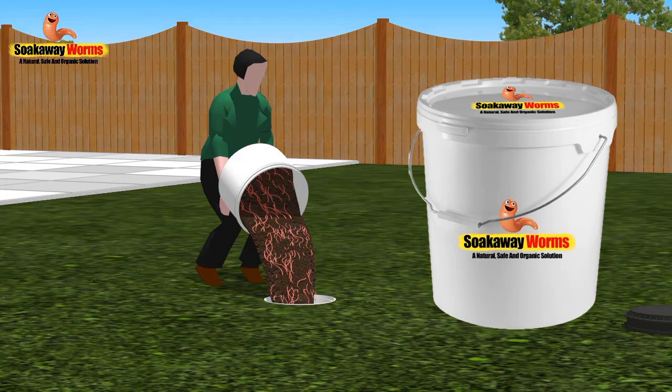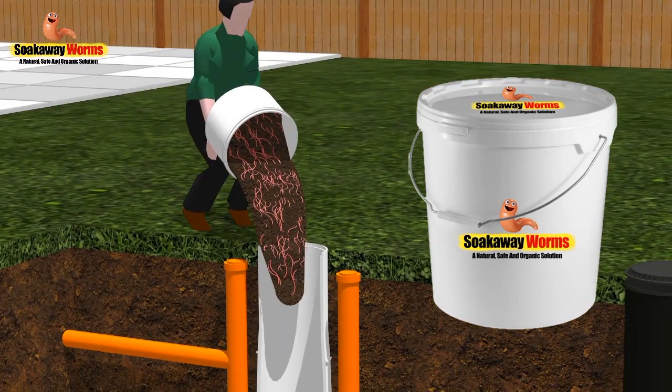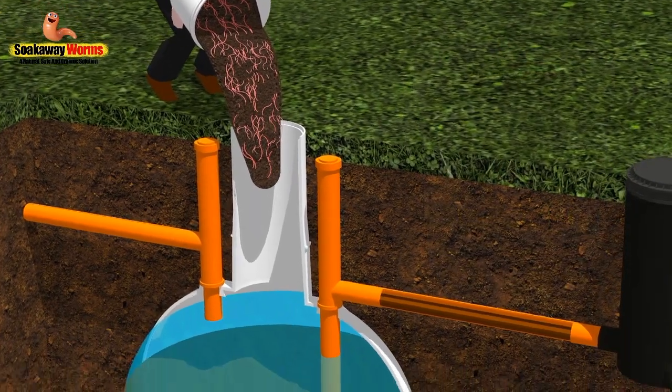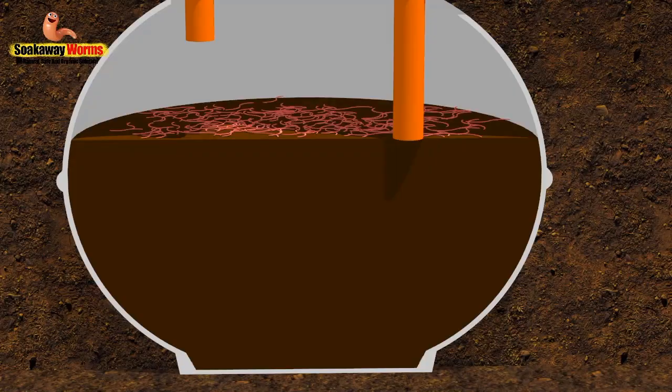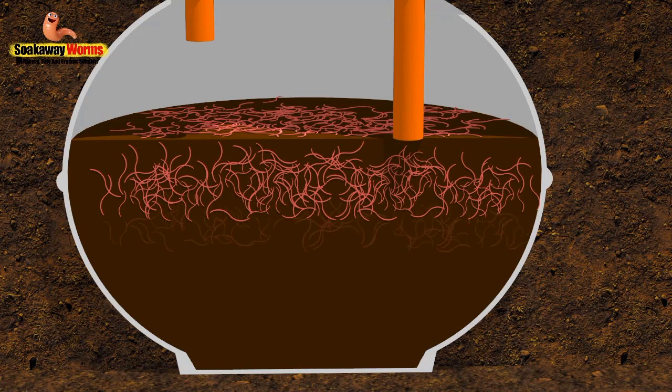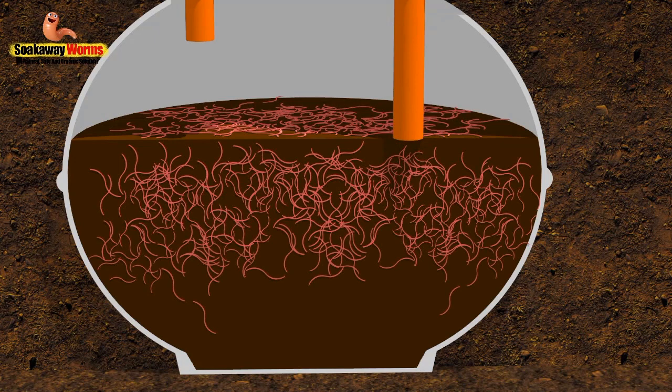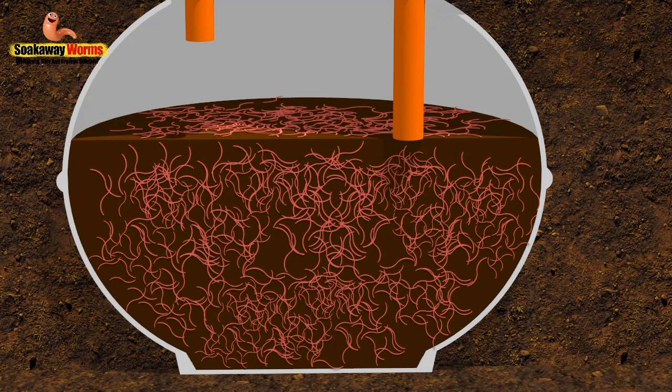Soak away worms come in a large bucket. Simply take the lid off the bucket and tip the entire contents into the septic tank. The worms will then sink to the bottom of the tank, landing on top of the sludge. And very quickly, these worms will adjust to their new surroundings and will start burrowing and working their way into the fat and the grease and the sludge, and they'll start breeding and multiplying.